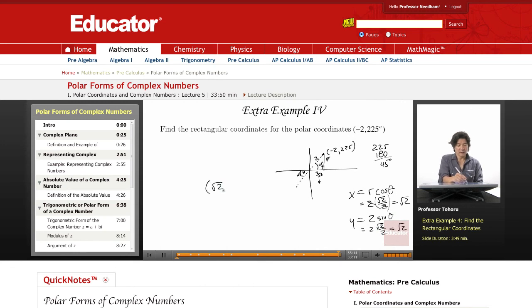Our rectangular coordinate becomes root 2, root 2. This is our x, this is our y. Make use of what you know about special triangles, trig, SOHCAHTOA, and whatnot.